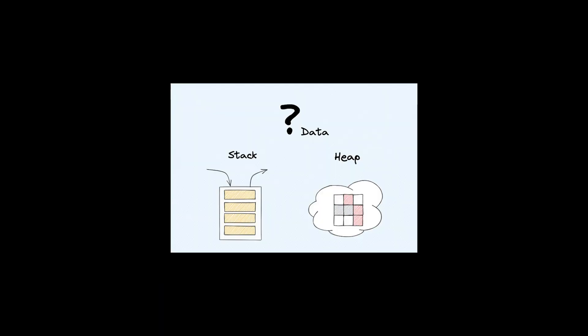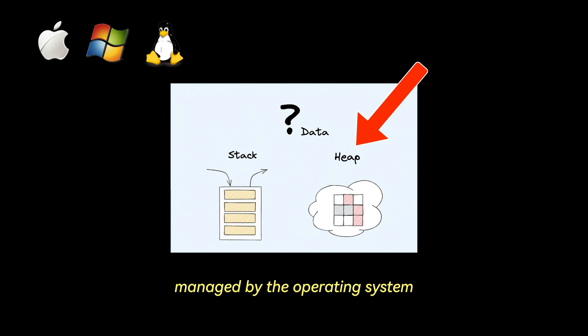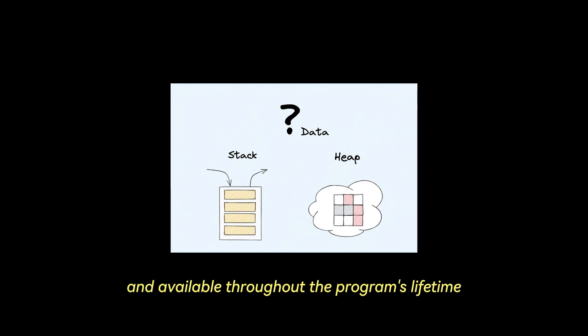Now let's talk about heap memory, starting with organization and management. The heap is a region of memory managed by the operating system and available throughout the program's lifetime.